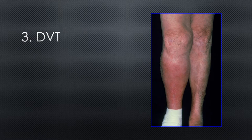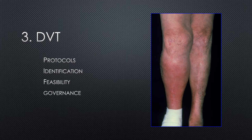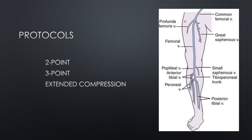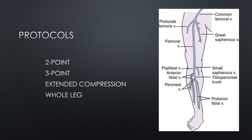The third and final component of triple POCUS is DVT. In terms of protocols, there are various options ranging from the simplest two-point compression — compressing at the saphenofemoral junction and at the popliteal trifurcation — up to a three-point scan involving the deep femoral vein, an extended compression scan every two centimeters from the inguinal ligament to the popliteal fossa, or a whole leg scan including the calf veins. For a patient with suspected PE, I'd recommend just the two-point compression, as clots tend to occur at branching points. These are the highest yield locations, so while you won't 100% rule out a DVT, you're very likely to pick one up and rule in a PE.